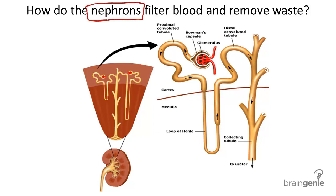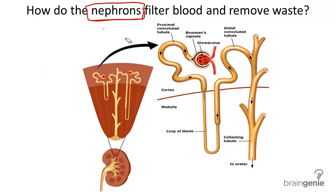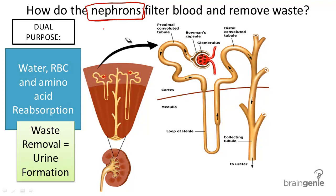So how does a nephron work to filter blood? Nephrons return water and much-needed nutrients back to the body to restore blood volume and pressure. This is essential to all cell function. Nephrons also get rid of waste and unneeded fluids, which results in urine formation. The two functions are: one, to reabsorb water, blood cells, and amino acids; and two, to remove waste.